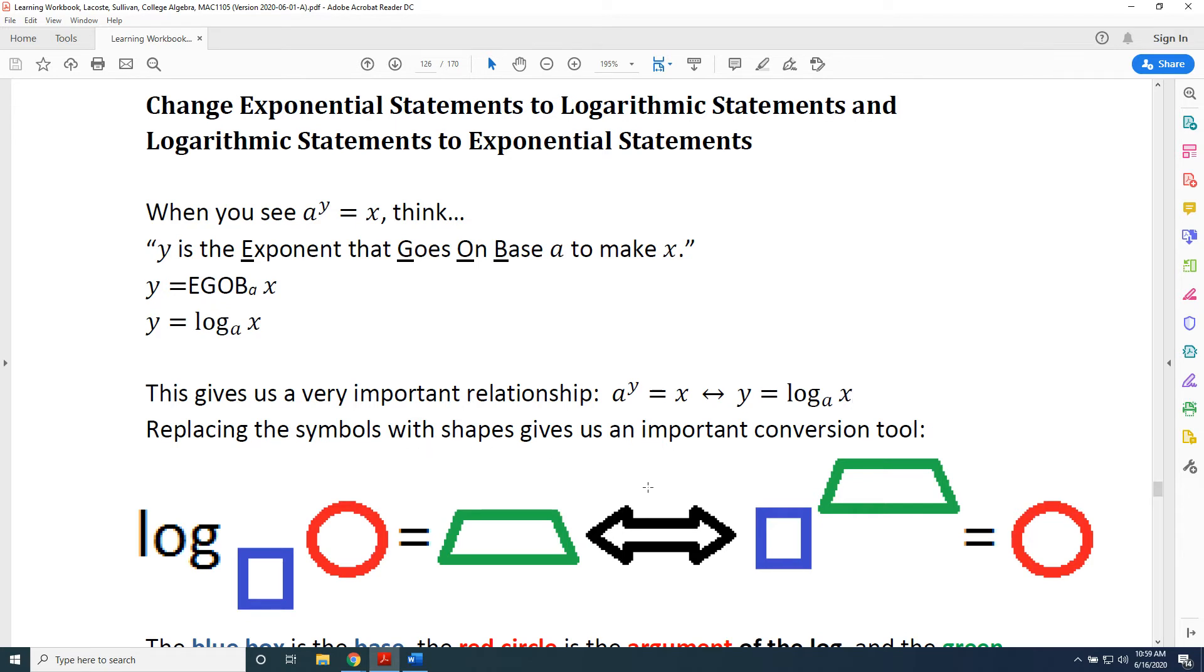Replacing the symbols with shapes gives us an important conversion tool. Every A is going to be replaced with a blue box. Every X is going to be replaced with a red circle. Every Y is going to be replaced with a green trapezoid.